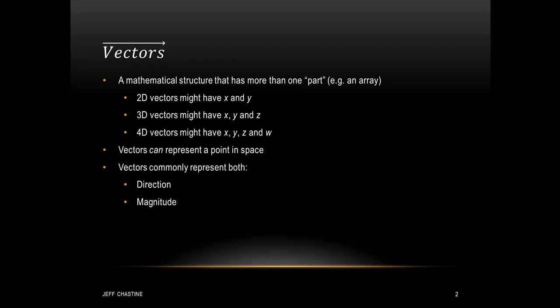You may be asking yourself what a vector is, and it's simply a mathematical structure that has more than one part. A lot of people who have a programming background tend to relate vectors to an array. So as an example, we might have a 2D vector, and that would have two parts, such as an x and a y. We might have a 3D vector, and that might have parts x, y, and z.